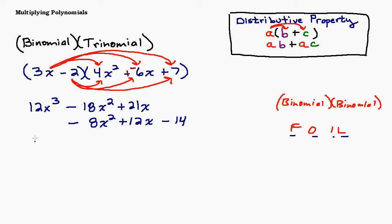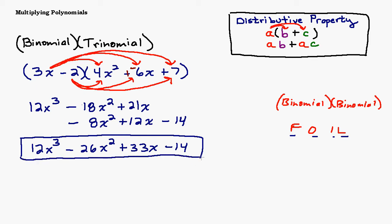So now if we combine our like terms, we've got a 12x to the 3rd, and nothing else will combine with that. I have these two x squared terms: a negative 18 and a negative 8, so that gives me a negative 26. And positive 21 plus 12 is 33x minus 14. So even though we had 6 terms after our multiplication, after combining like terms, we've narrowed this down to a 4-term polynomial: 12x cubed minus 26x squared plus 33x minus 14.